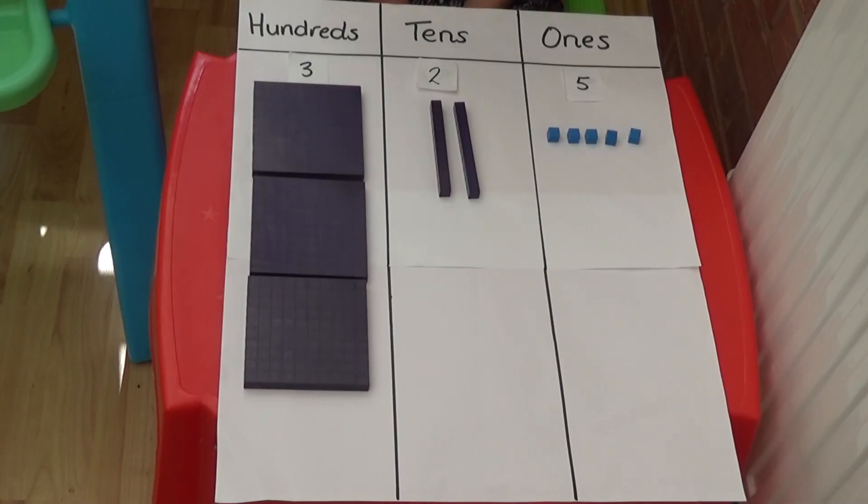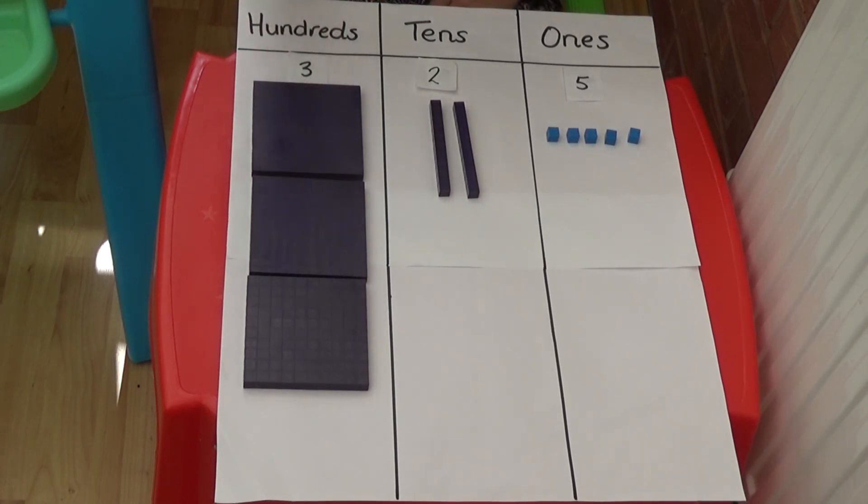I've used Deans to make the number 325: 3 hundreds for the 300, 2 tens for the 20, and 5 ones for the 5.